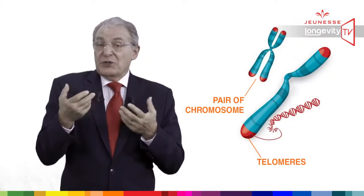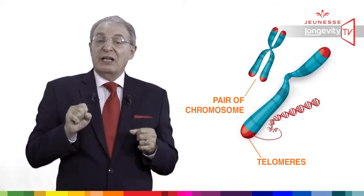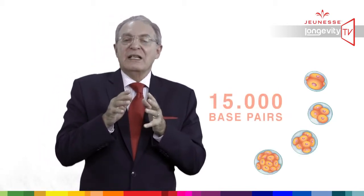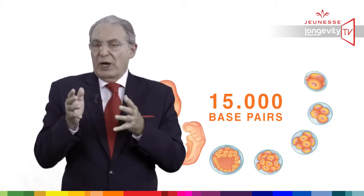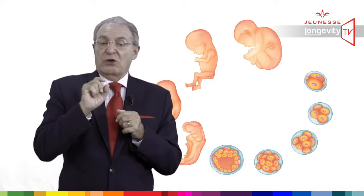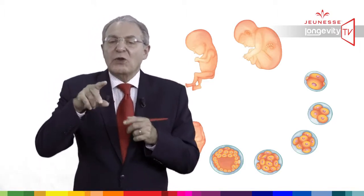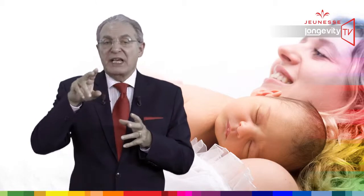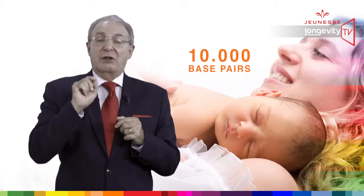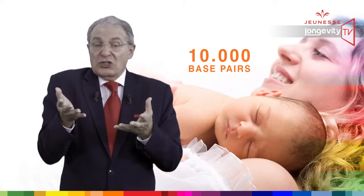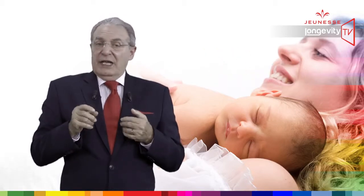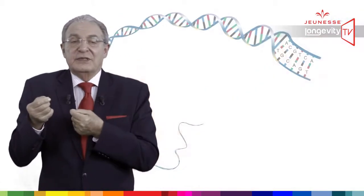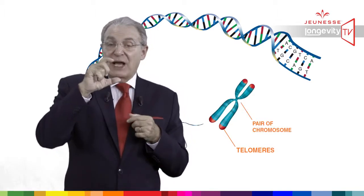Today we can measure the biological age of cells by the length of the telomere. When we are conceived, the embryo has about 15,000 base pairs in its telomere. By the way, a base pair is a standard unit of measurement in the chromosome, and the total length of a DNA strand is 3 billion base pairs. So after many replications, a newborn has only 10,000 base pairs in each telomere — we have already lost 33% of our telomere length.